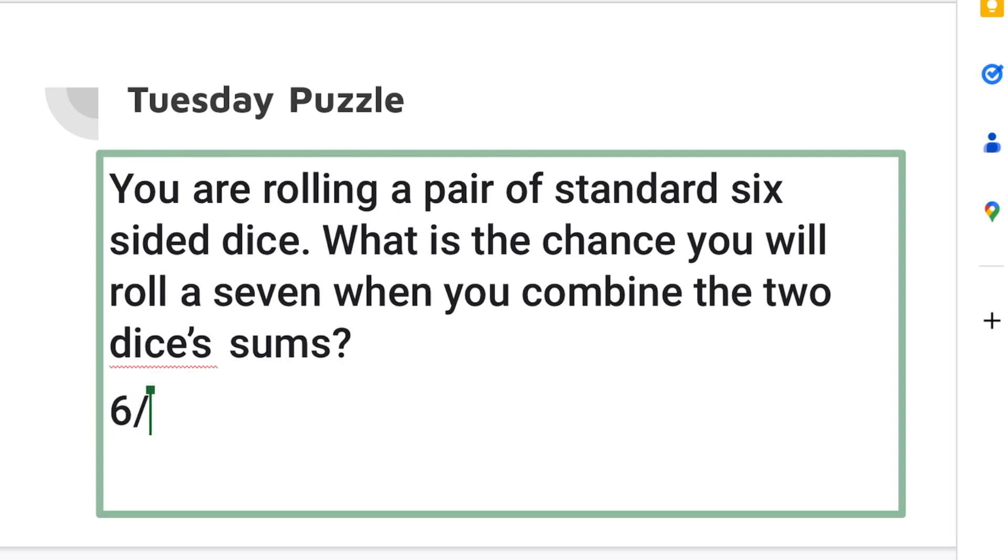Since there's two dice and each one has a one in six probability of rolling a certain number, six squared will be 36. So it's going to be a six out of 36 chance or a one in six chance, which is about equal to 16.67%.